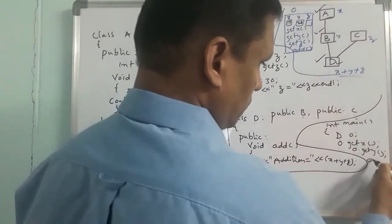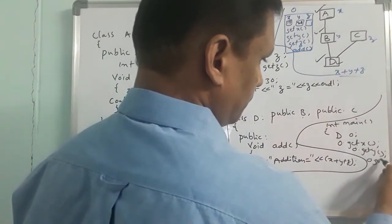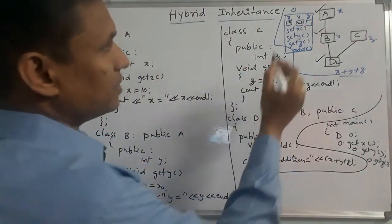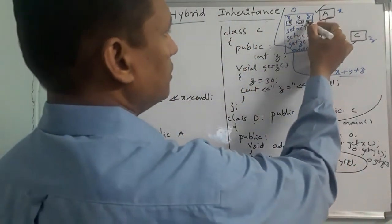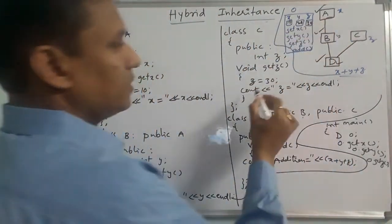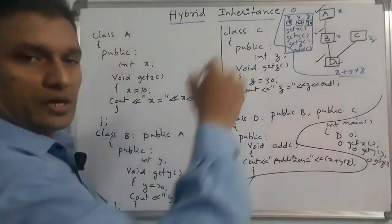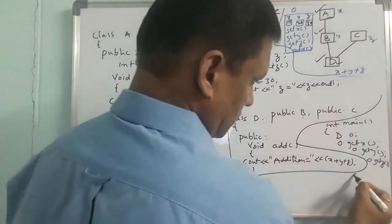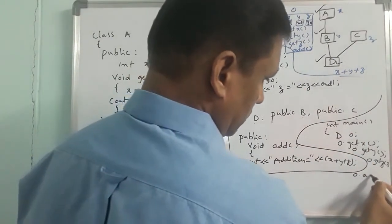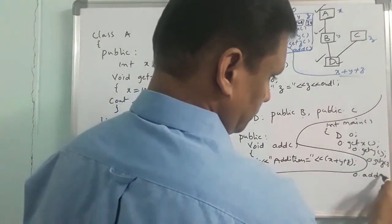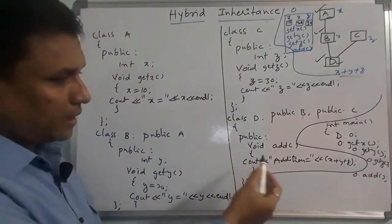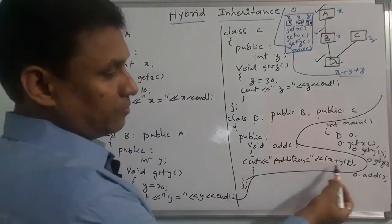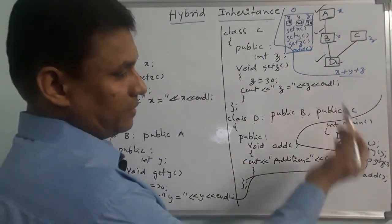Next, we call o.get_z(). The get z function sets z equal to 30. Then the add function: o.add() computes x plus y plus z.